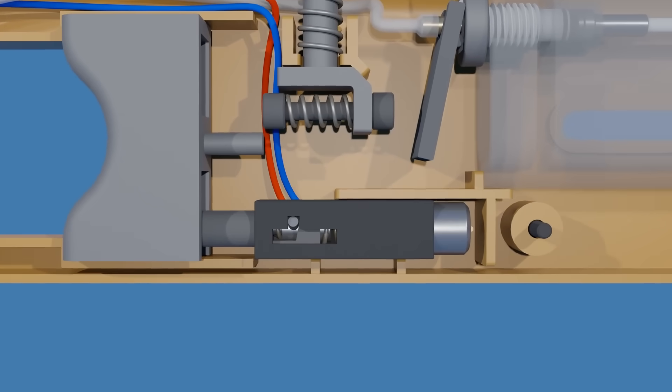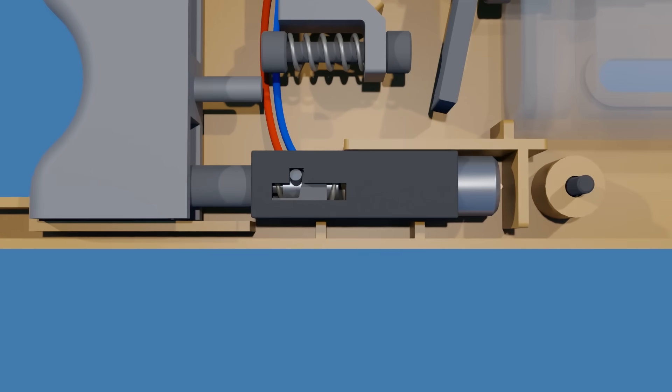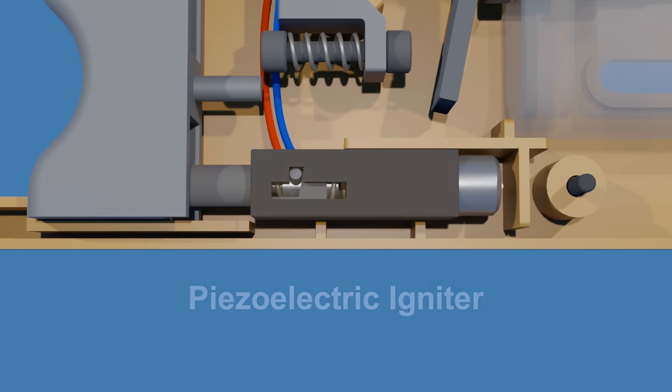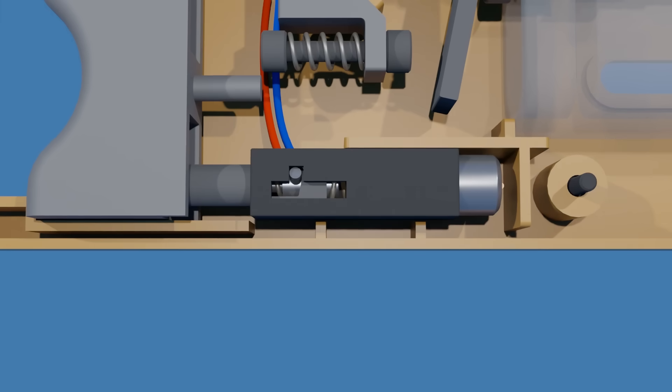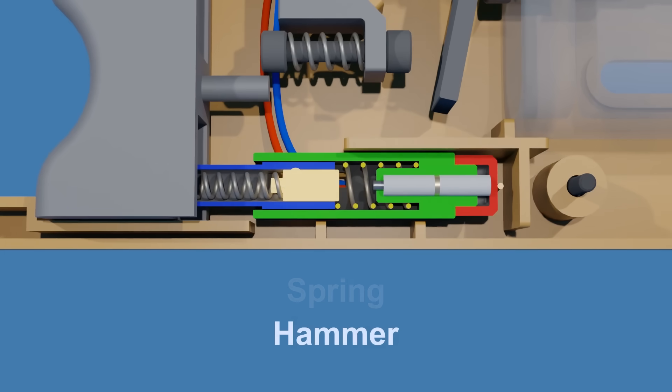Now let's look at how the spark to ignite the fuel is generated. This is the piezoelectric igniter. When you press the ignition switch, it compresses a small spring connected to a hammer inside the igniter.